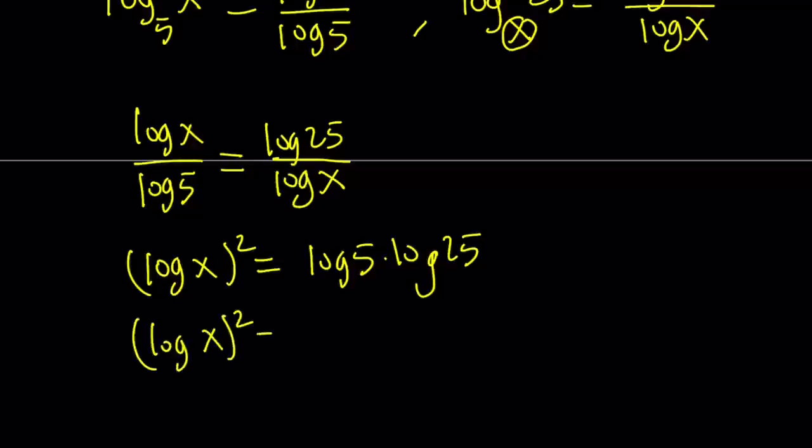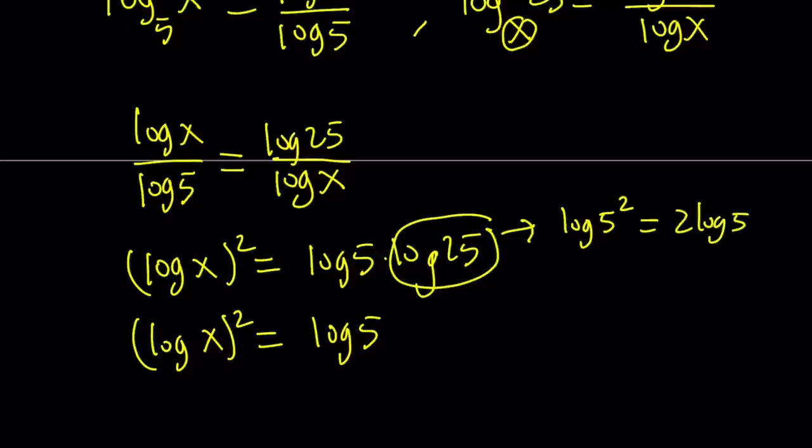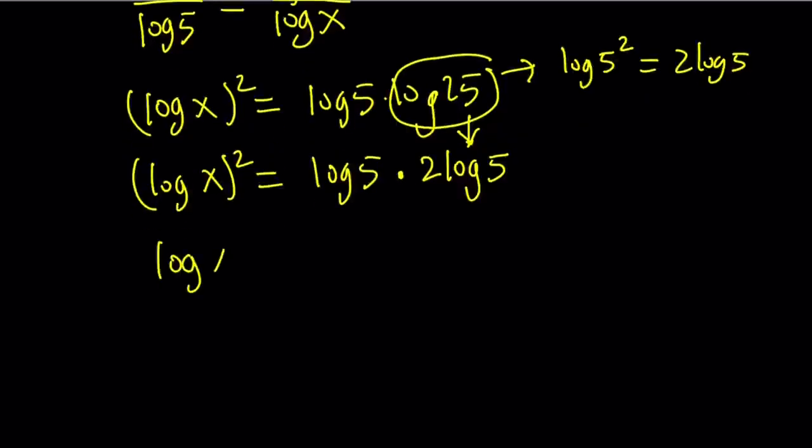We can write log 25 as log 5 squared. So that is 2 log 5 by using the power property. So we can write this as 2 log 5. When you multiply log 5 by 2 log 5, you get 2 times log 5 squared. So we kind of have squares on both sides. 2 is not a perfect square. But we can take the square root and use the absolute value. So this is going to give us two results.